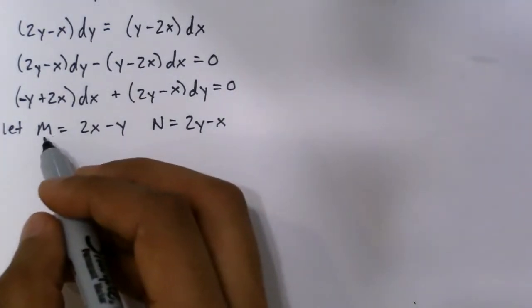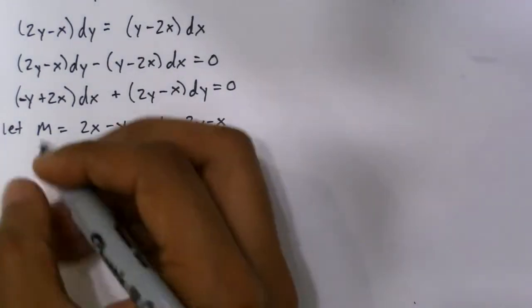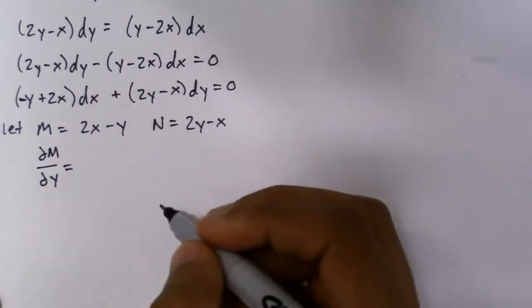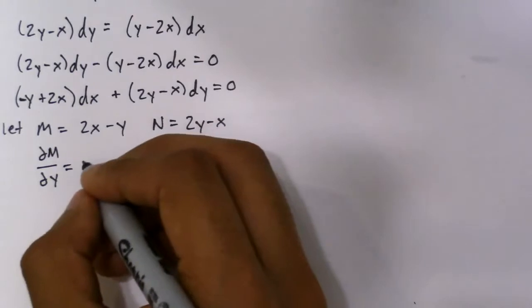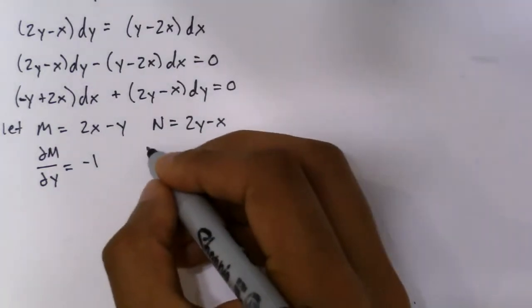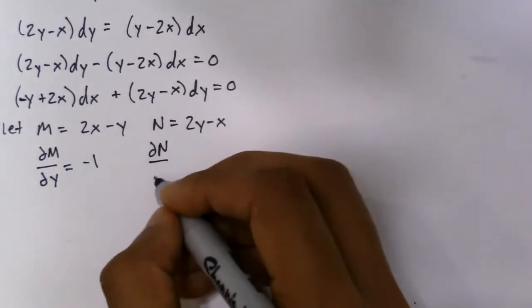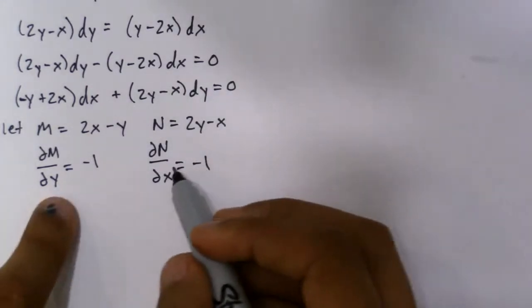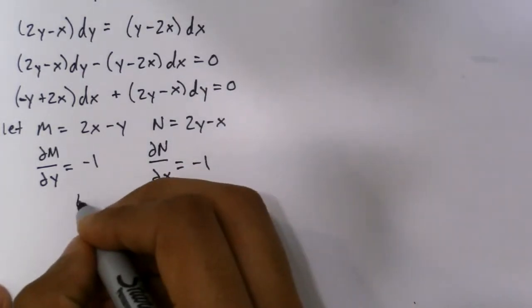And then now I'm going to take the partial of M with respect to y. So that simply is just negative 1. I'm going to do the partial of N with respect to x. And that's negative 1. And since these two are equal, they are now exact.